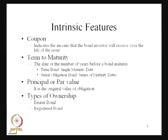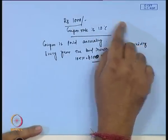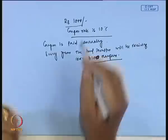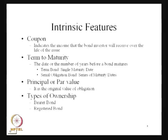Then you have the term to maturity. What do you mean by this term to maturity? It is basically the date or the number of years before a bond matures — when this particular bond is going to mature. We have two types of bonds in this context on the basis of the term to maturity. One is the term bond, where a single maturity date will be mentioned. For example, this bond will be matured after 10 years or 15 years. So the term to maturity for this bond is either 10 years or 15 years.